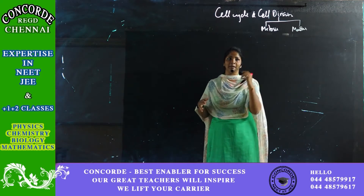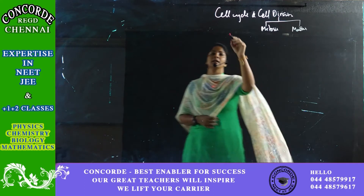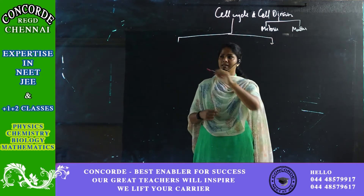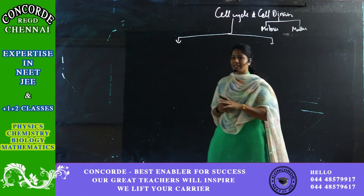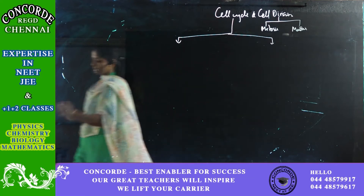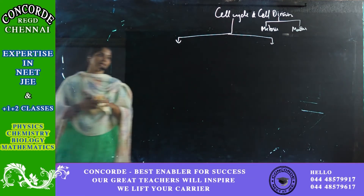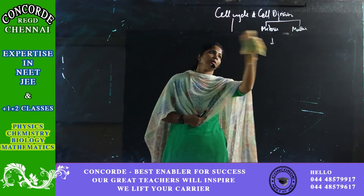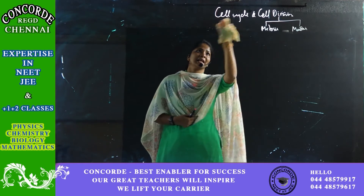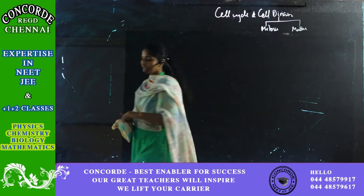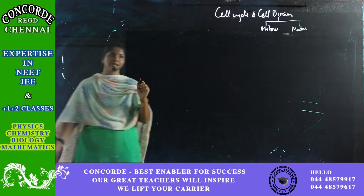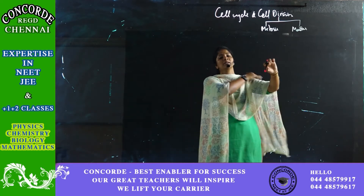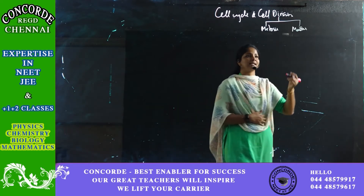Why should cells divide? Cells should divide to increase volume, to maintain the nucleo-cytoplasmic ratio, to increase DNA content, to grow, to repair, to regenerate, to work, and to metabolize. For all these things, my cells should divide and grow.